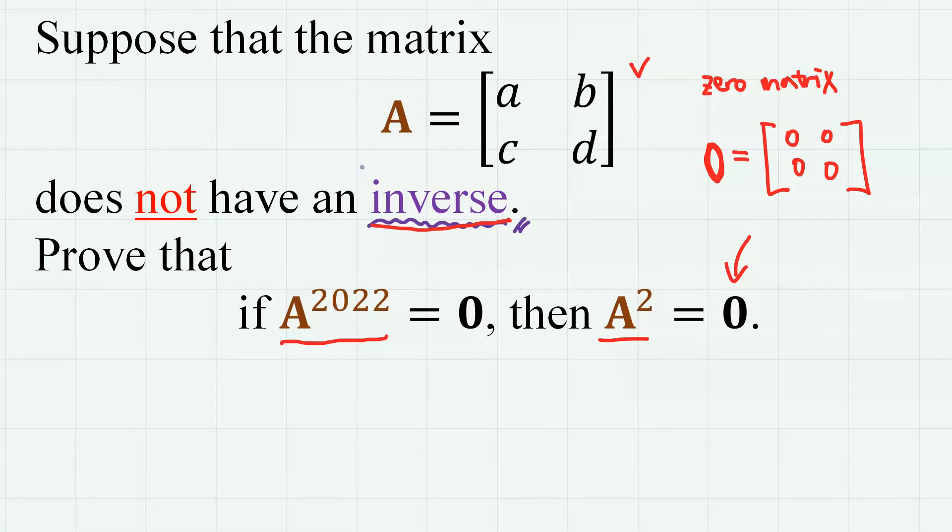So there are two major points here. First, we must somehow use the fact that the matrix A does not have an inverse. Second,